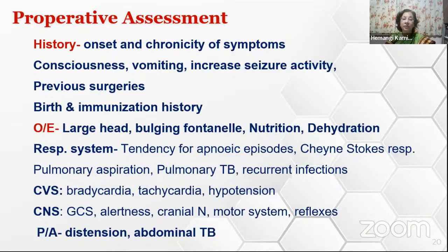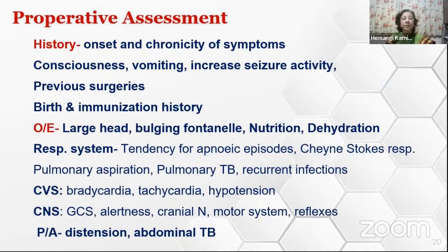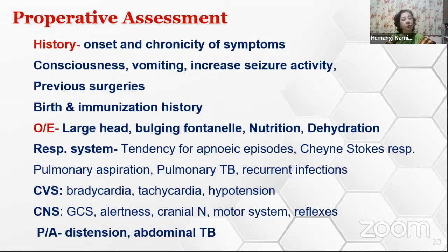On examination, look for size of head, whether a bulging fontanelle suggesting raised ICP is present. These patients often have deficient nutrition and dehydration. Respiratory system may show apneic episodes, irregular respiration, pulmonary aspiration, and associated pulmonary tuberculosis or other concurrent infections. There can be bradycardia, tachycardia, or hypotension. CNS should be thoroughly assessed—Glasgow Coma Scale, consciousness, cranial nerve functioning, motor system. Per abdomen should also be assessed to rule out any abdominal pathology, especially tuberculosis.